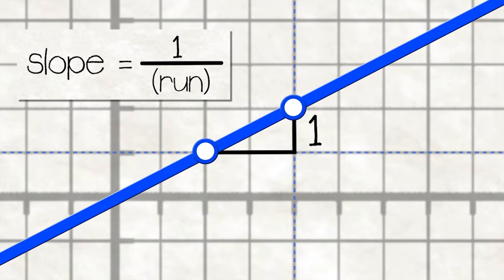And then we count over how far across this is. Run stands for running, as if you were running on a horizontal surface. So count the tick marks from here to here. When we count, we have one, two.